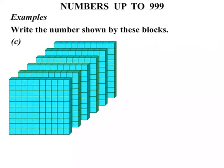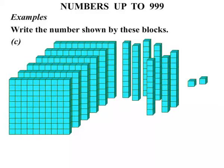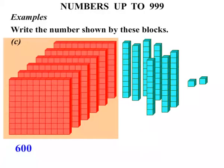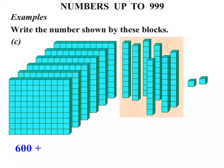Now let's consider part C. A number of flats there, a number of longs, and some shorts. Well, let's count in hundreds. 100, 200, 300, 400, 500, 600. Plus, counting in tens. 10, 20, 30, 40, 50, 60, 70.